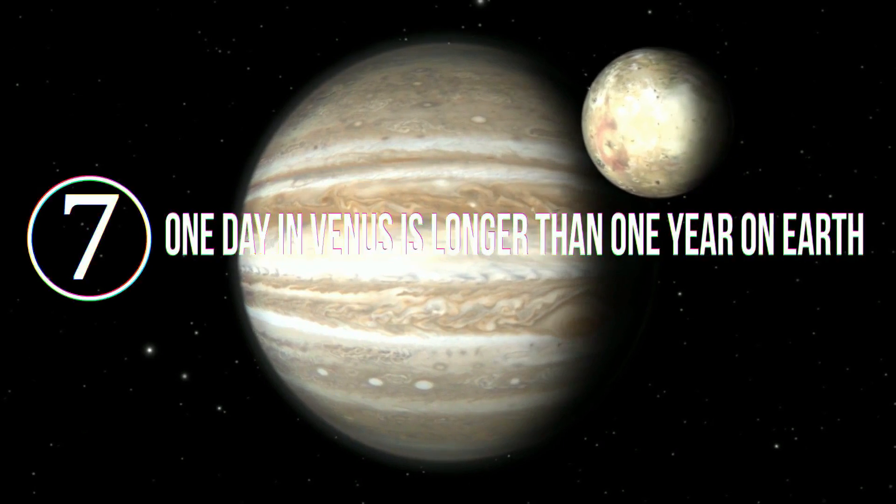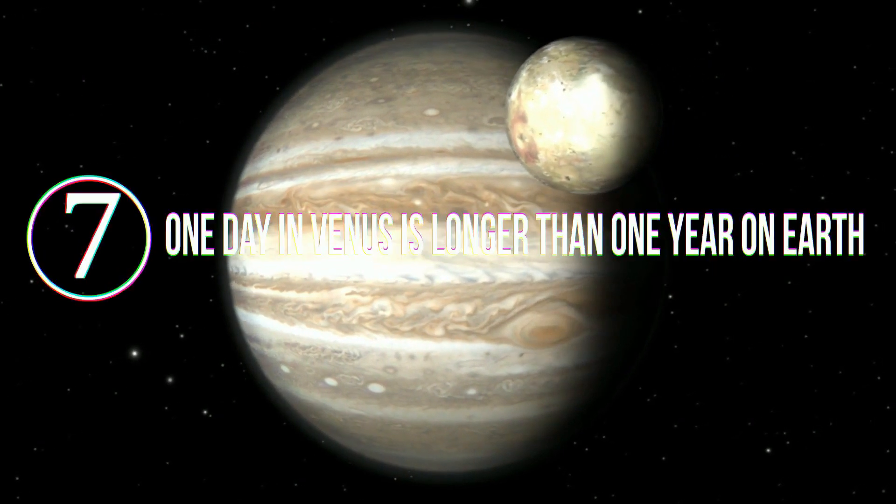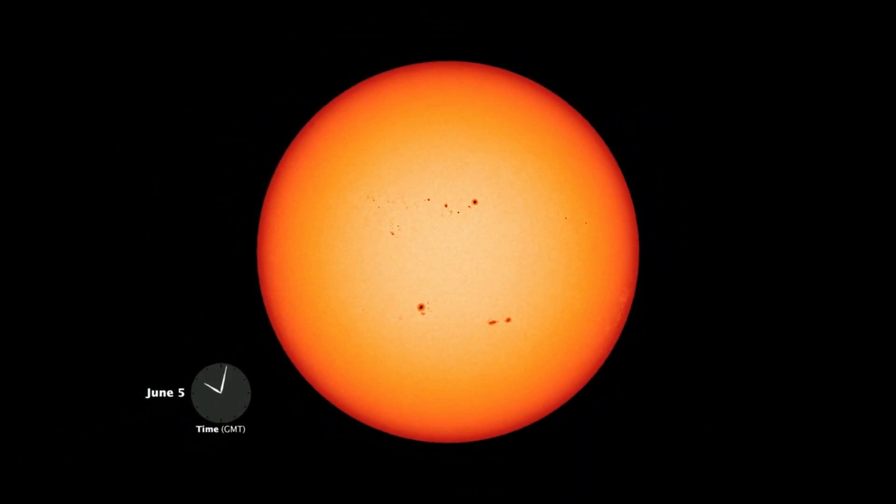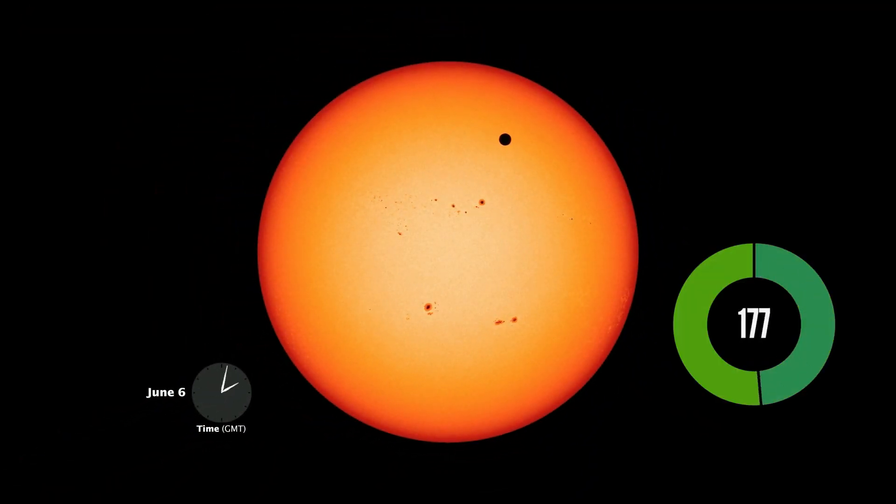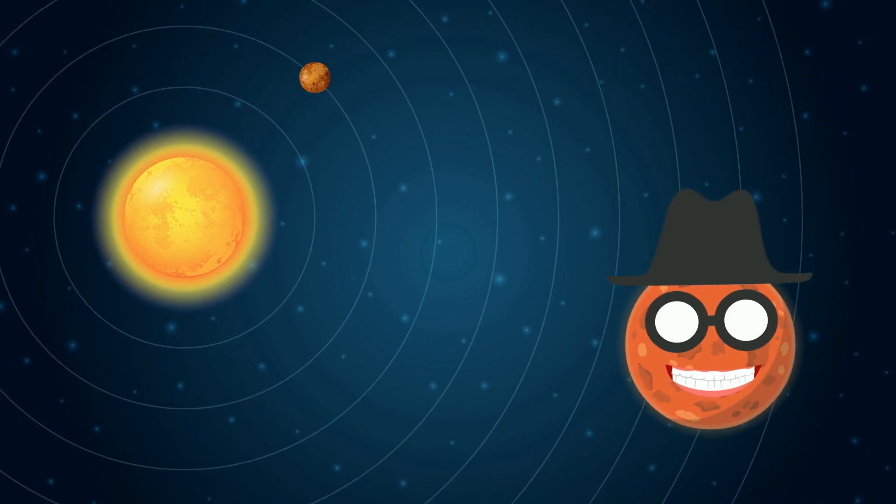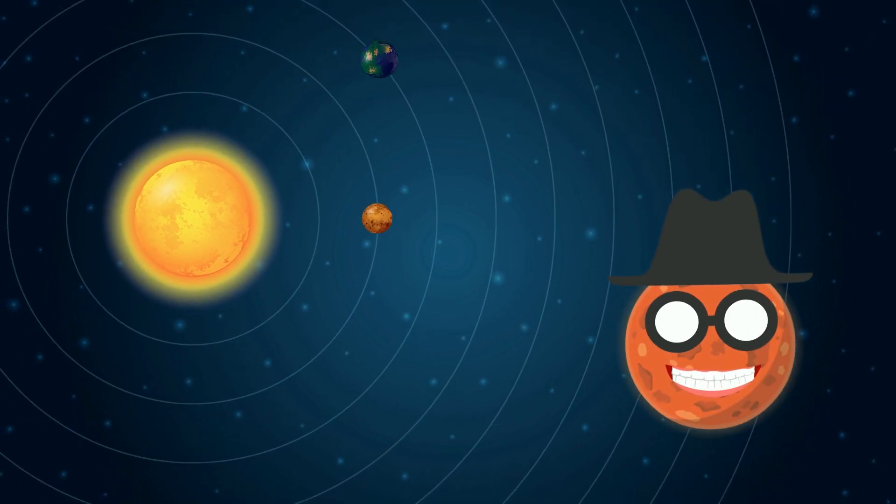Number 7. One day on Venus is longer than one year on Earth. This might seem a bit weird as we describe a day as 24 hours. However, that's on Earth. Venus has an incredibly slow axis rotation. It takes more than 270 Earth days to complete one of its axis rotations. Actually, a pretty funny fact is that Venus takes less time than Earth to complete its orbit around the Sun.